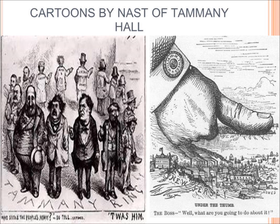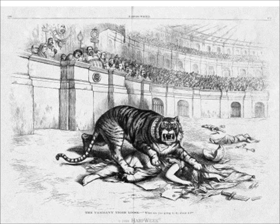Here are some more cartoons. If you look at the one on the left, on the bottom it says 'Who stole the people's money?' — 'T'was him,' and it's just people pointing, all leading back to Boss Tweed. On the right it says 'Under the Thumb — the boss — well, what are you going to do about it?' He had that kind of power where no one could fight back. We know this is Tweed because his shirt button says 'William M. Tweed,' and he has all of New York City under his thumb. There's also a Tammany picture showing Tammany as a lion or tiger, showing how they rip apart their competition.